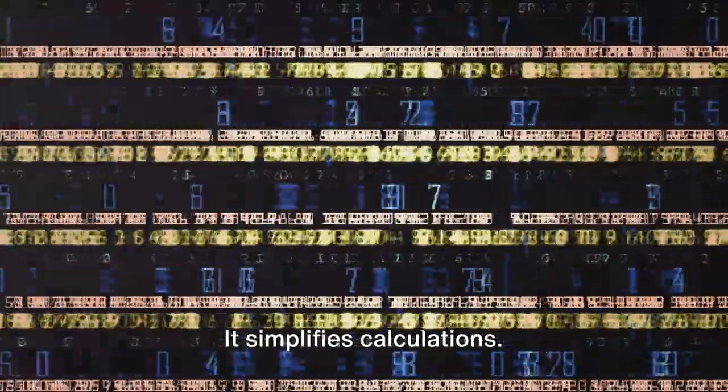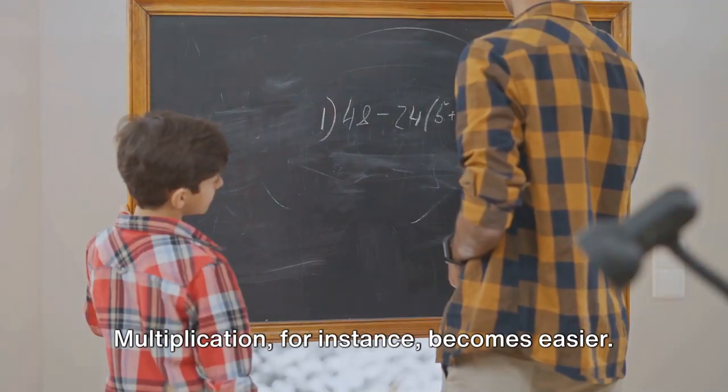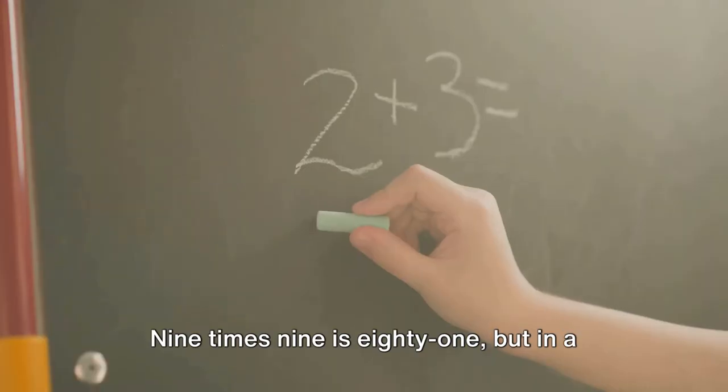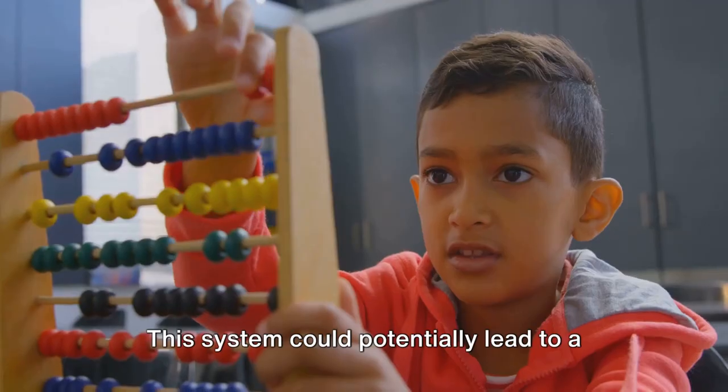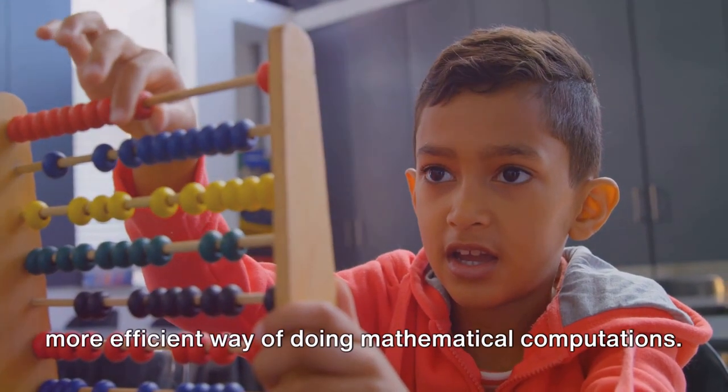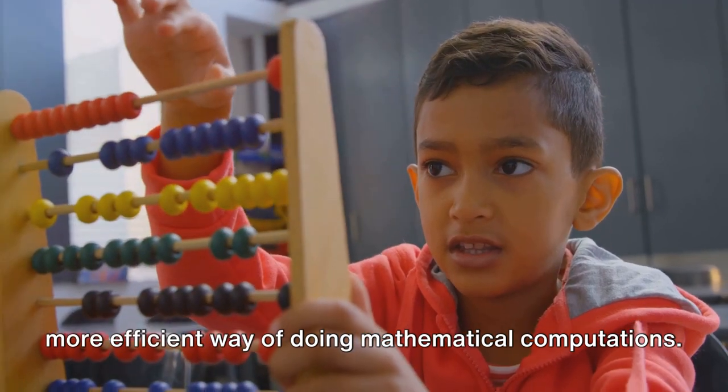It simplifies calculations. Multiplication, for instance, becomes easier. 9 times 9 is 81, but in a base 9 system, it's simply 100. This system could potentially lead to a more efficient way of doing mathematical computations.